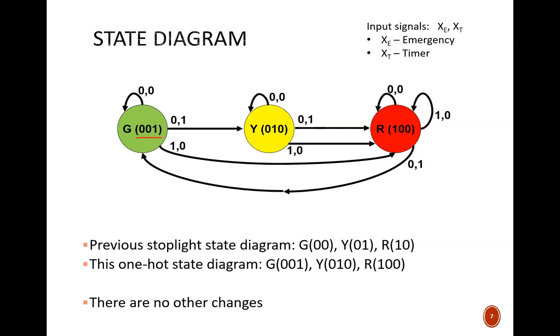Here we see the state code for green is 001, for yellow is 010, and for red is 100. In other words, we have one hot encoding. Only the rightmost flip-flop will be high in the green state. Only the middle flip-flop will be high in the yellow state, and only the leftmost for red.